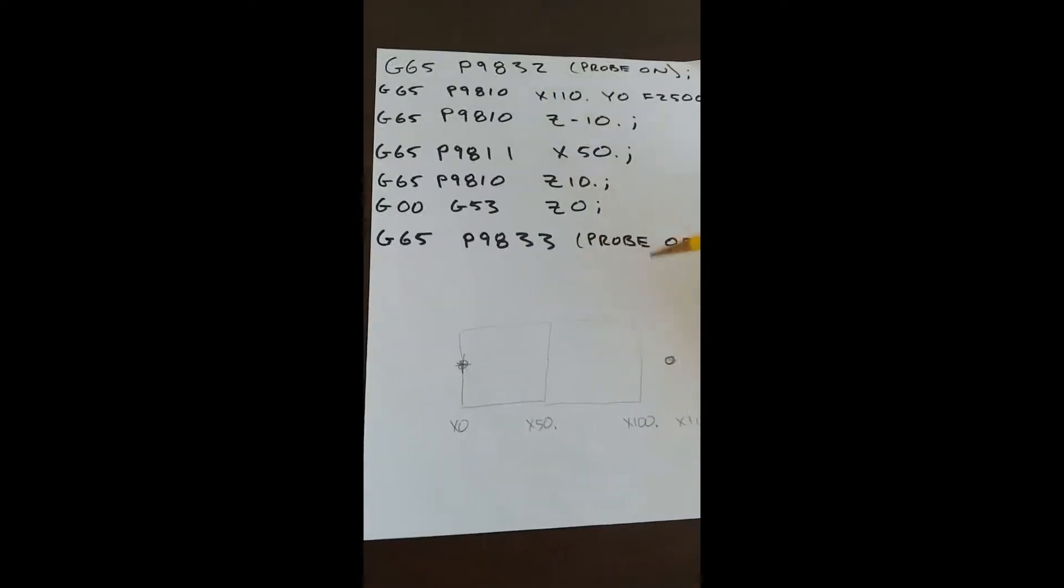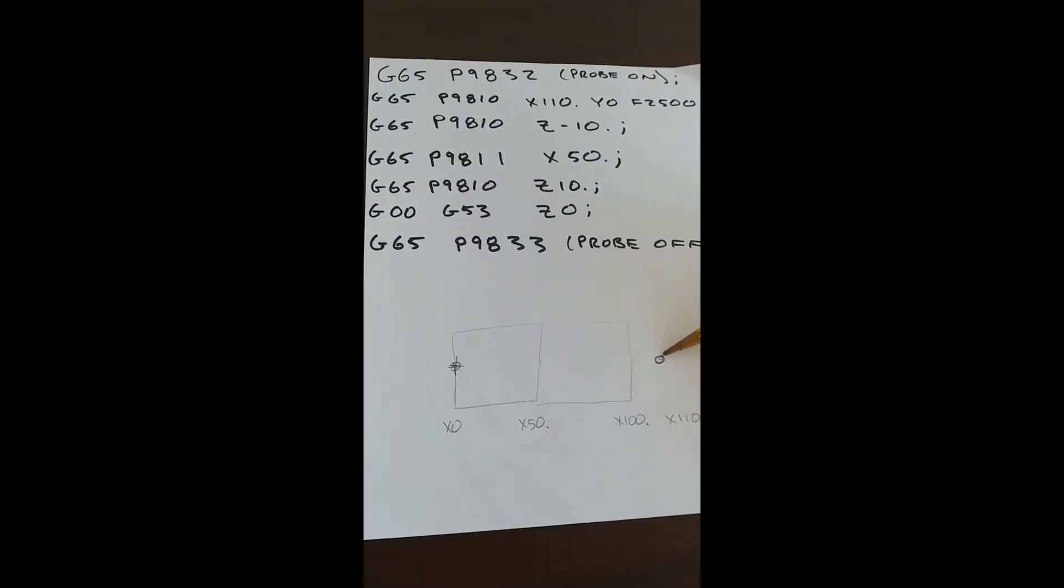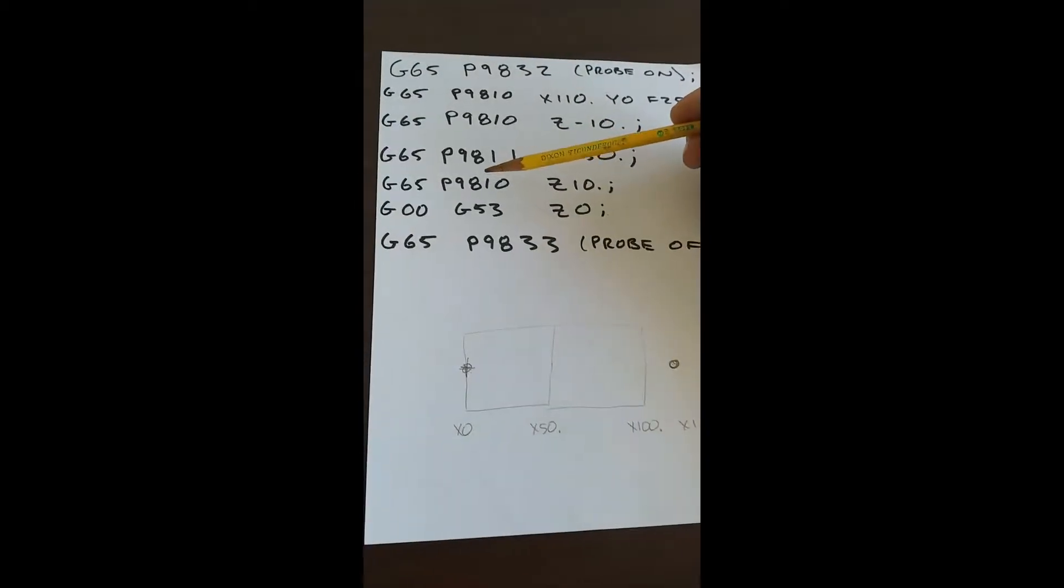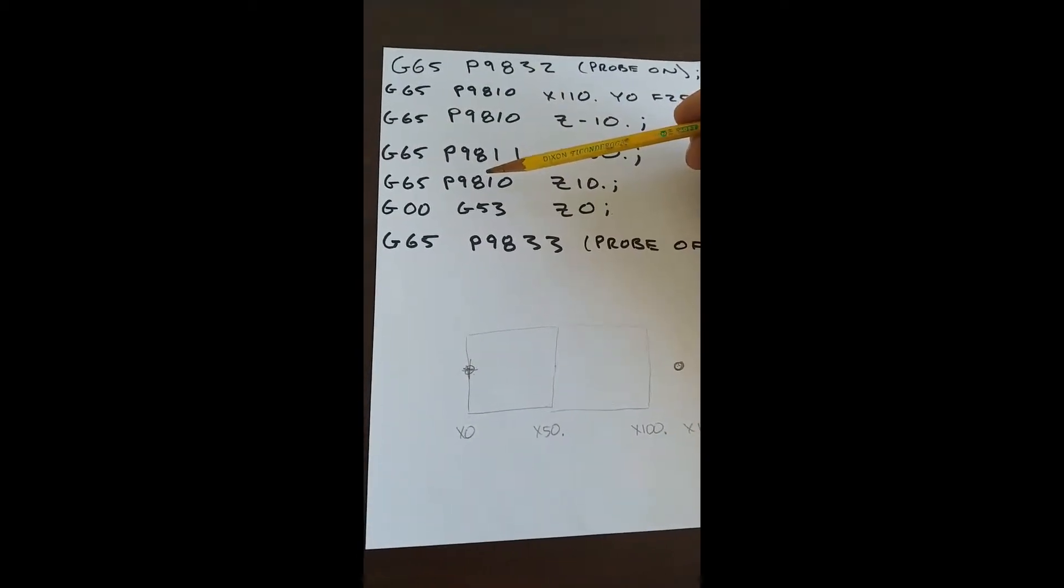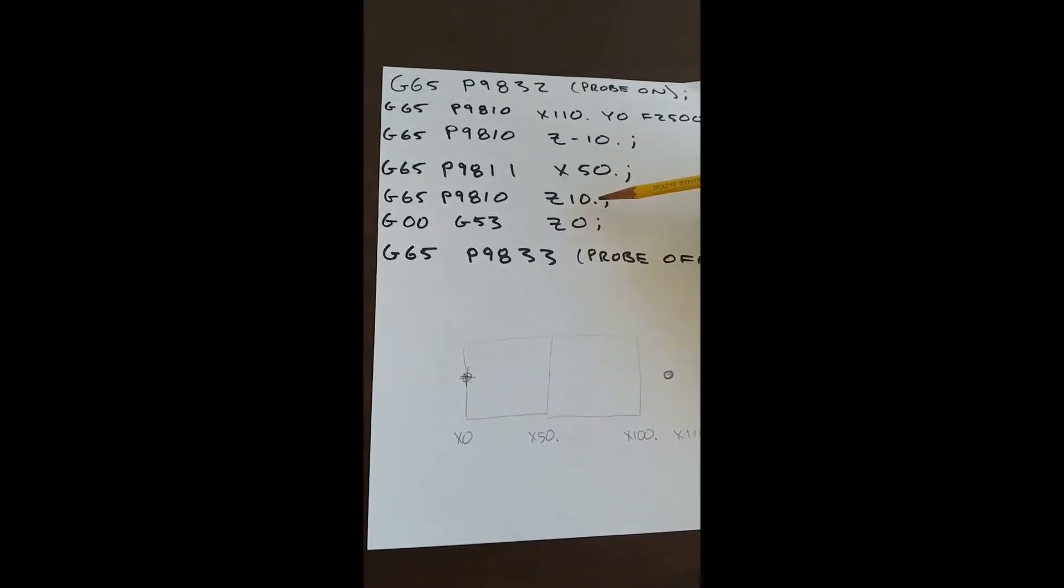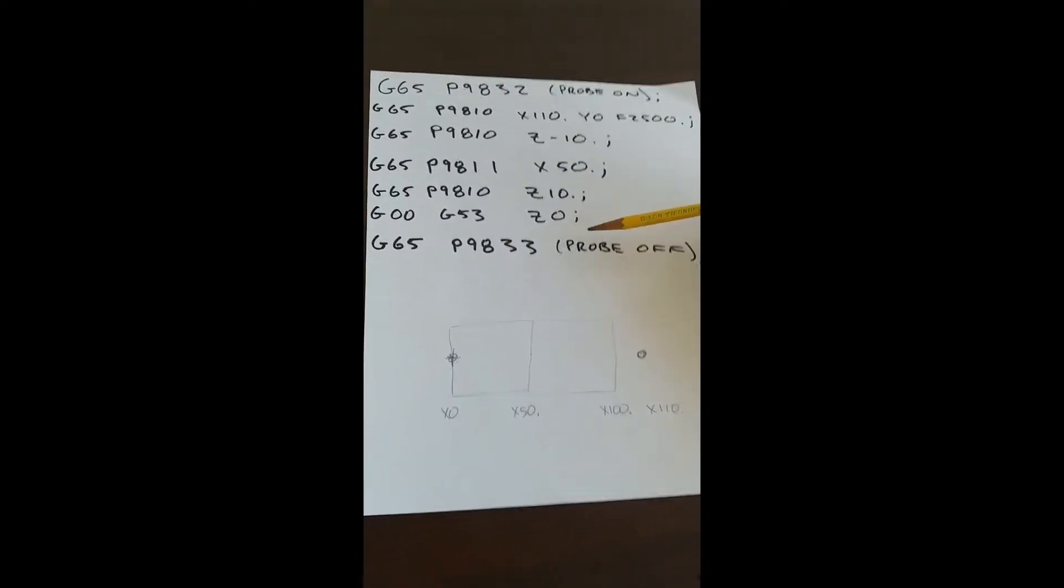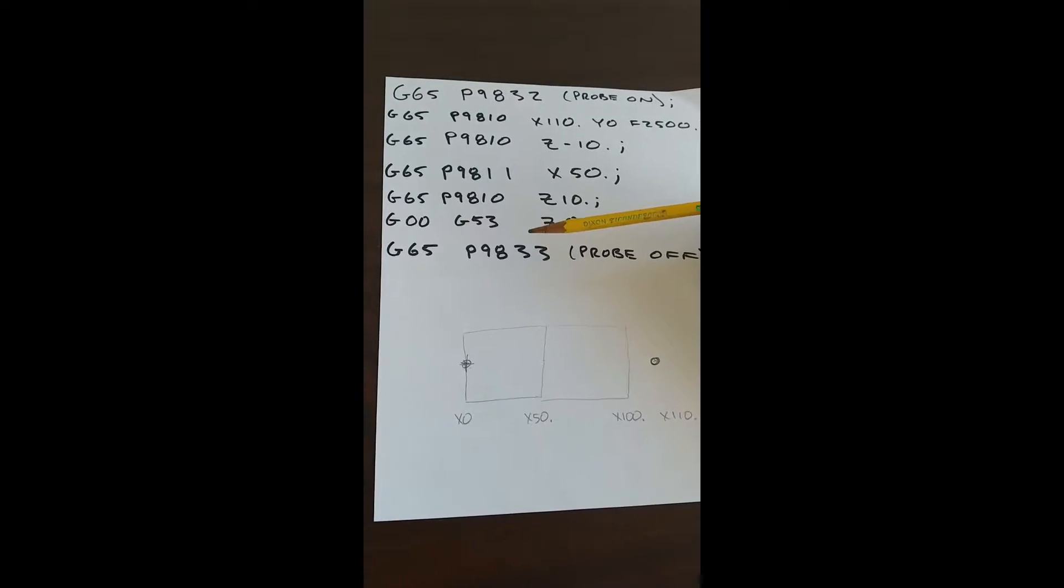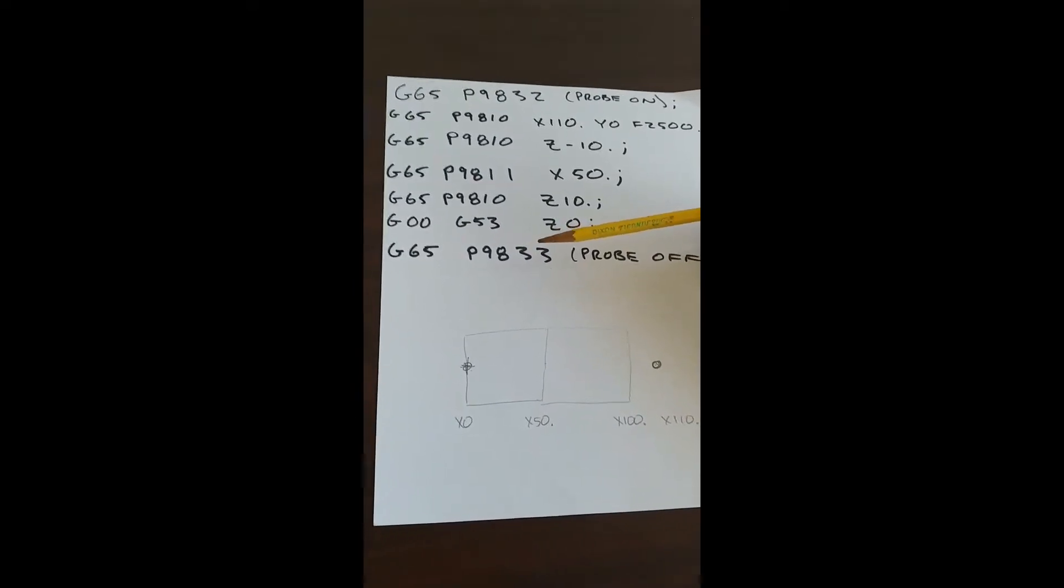So after I touch the surface, it's going to retract back to X110. And then I command another 9810 positioning move to go 10 millimeters above the part. Then I return home in Z and turn the probe off with G65-P9833.